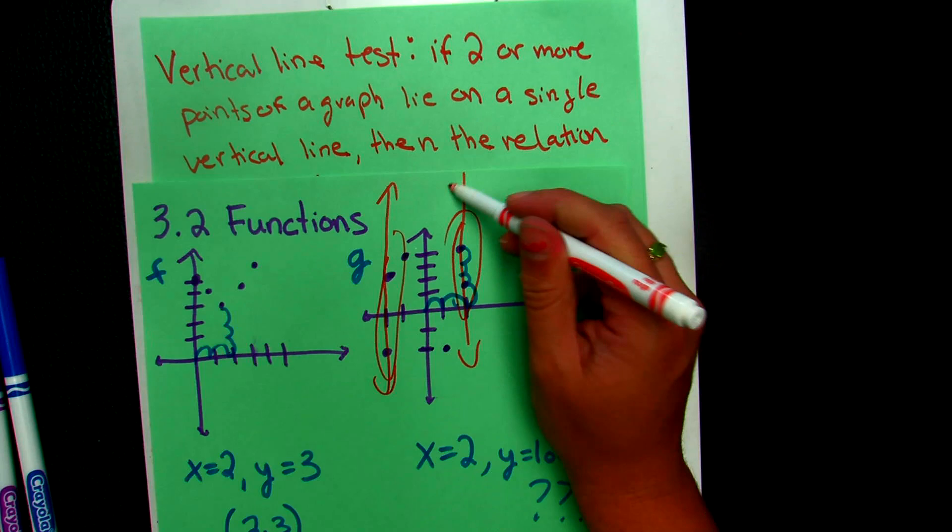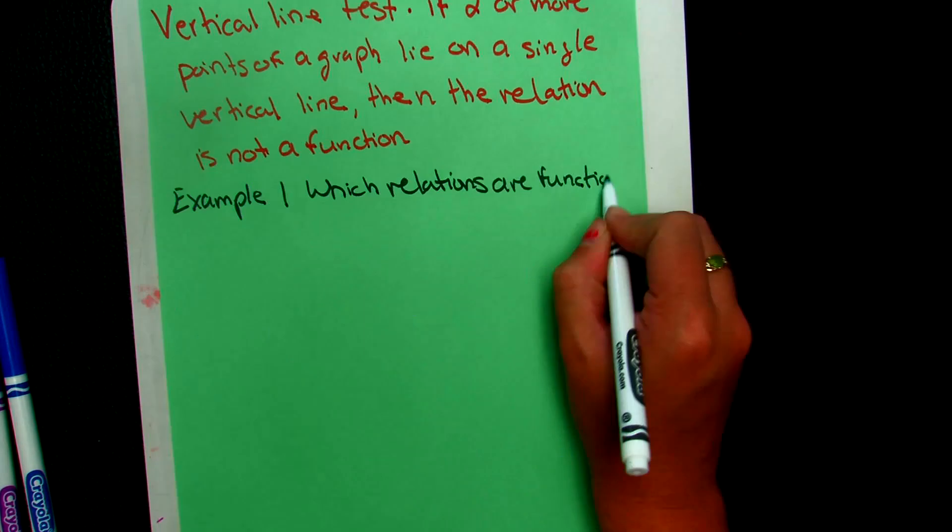We can also look at set notation and determine if a relation is a function or not. So let's look at example one. Which relations are functions? And so you have this relation F is equal to (1, 5), (3, -1), (3, 2), (5, 4). So that's relation F.